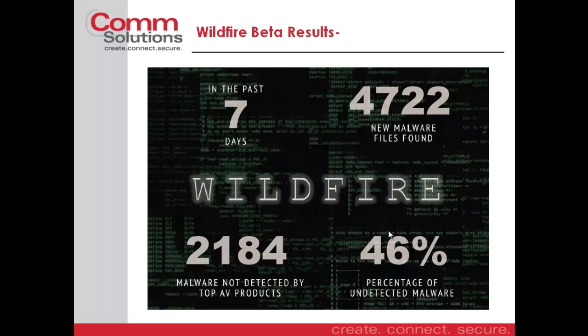This screenshot is a snapshot in time when WildFire was first in its beta. In a seven-day span, there were 4,722 pieces or new files of malware found. Of those 4,722 files, 2,184 of them were malware not yet detected by any of the top AV vendors — meaning 46% of the traffic was yet undetected malware by any of the top AV vendors.